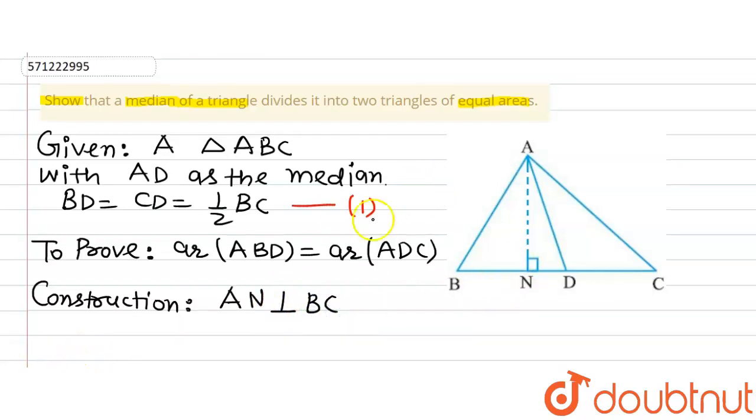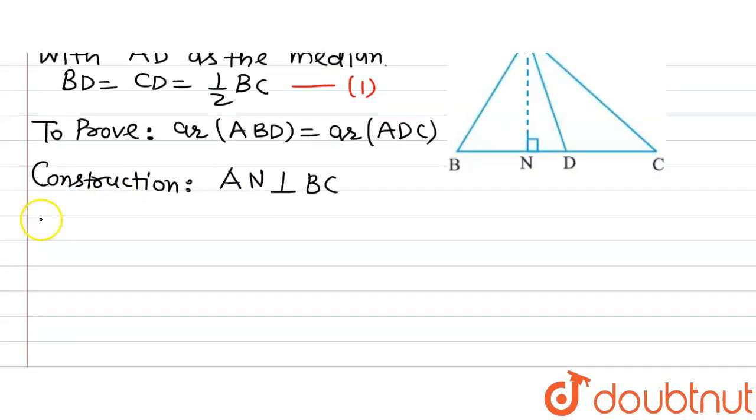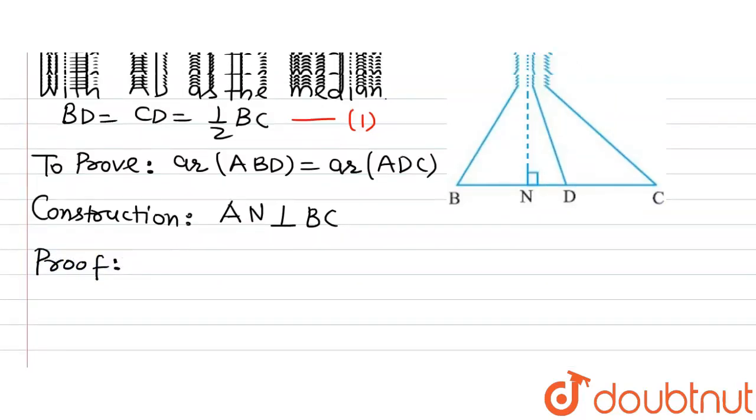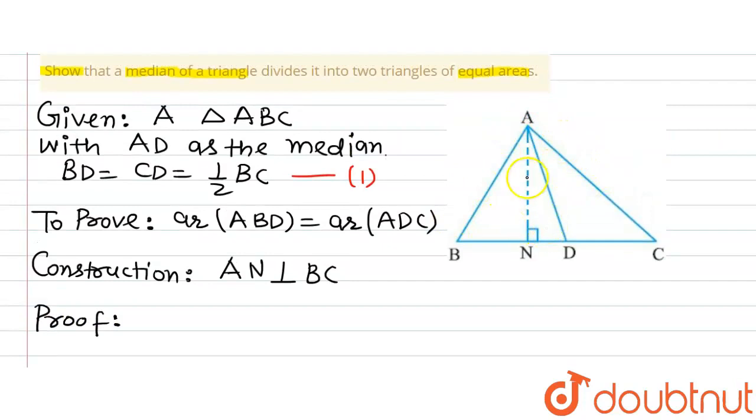Proof: In triangle ABD, the area ABD equals half times base times height, which is half times BD times AN. Let's name this equation 2.